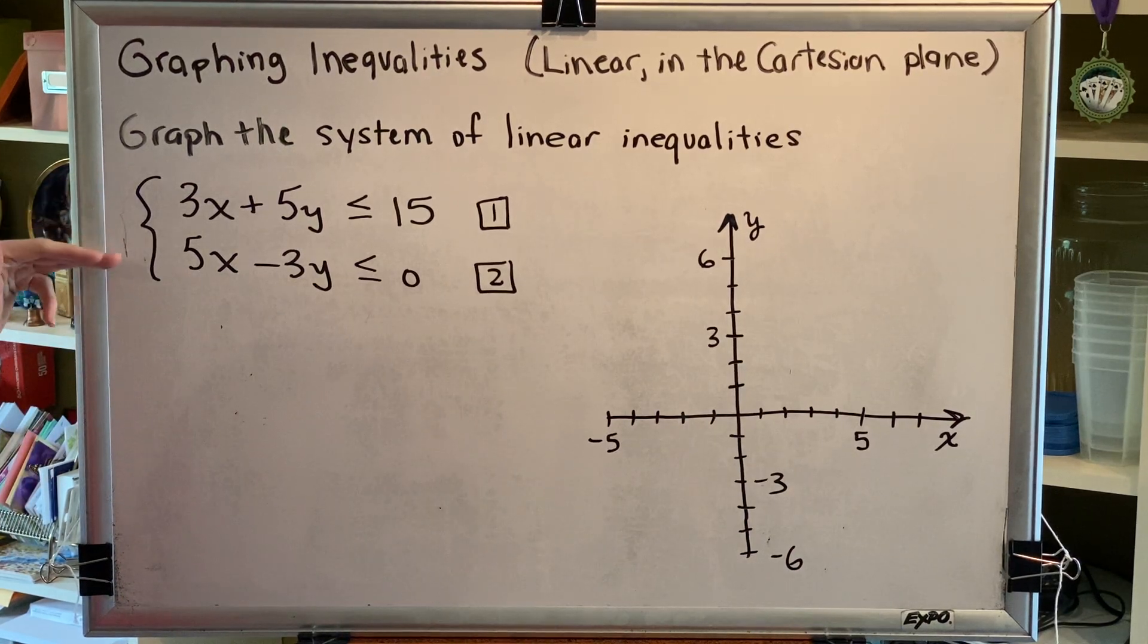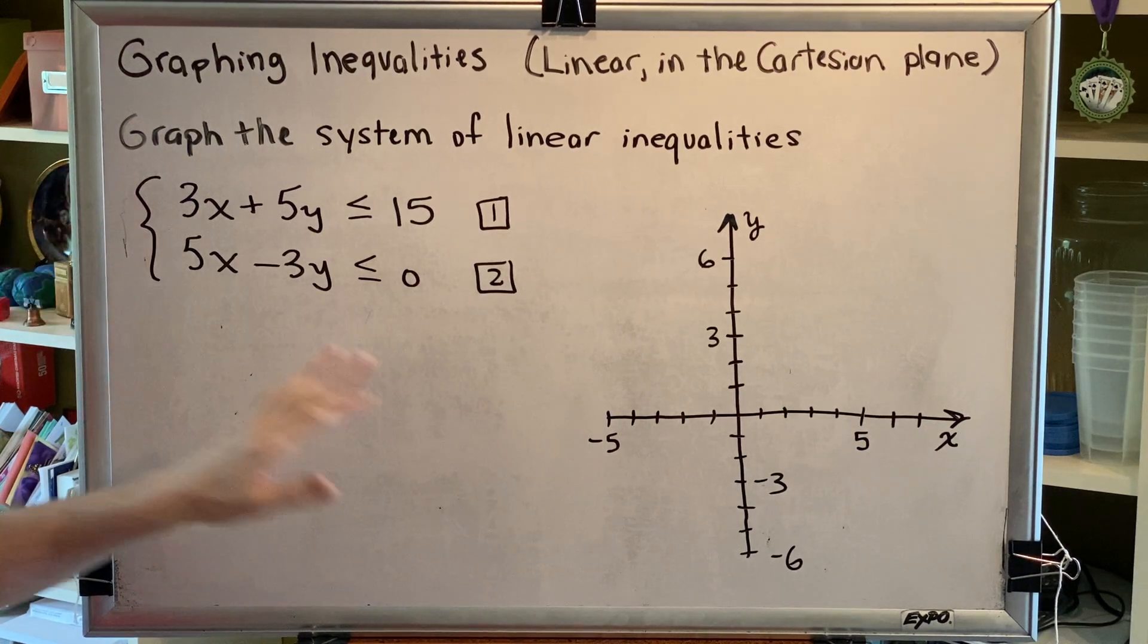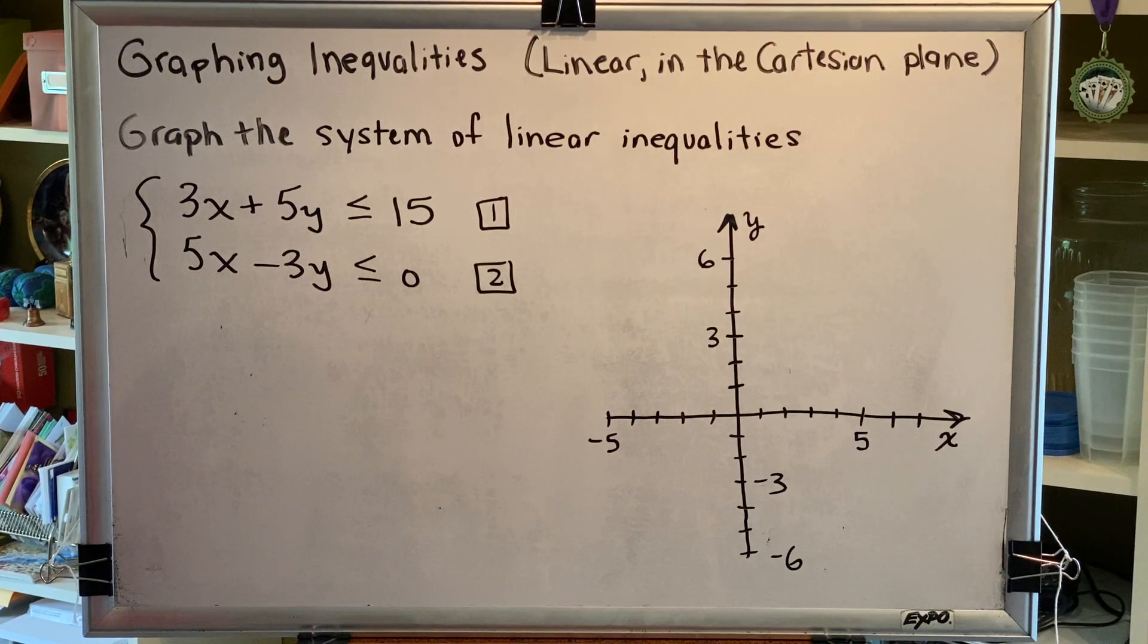We can see that we've got two inequalities joined by a large brace. To graph the system, we simply graph each one on the same graph grid and identify the overlap of the shaded region from each.